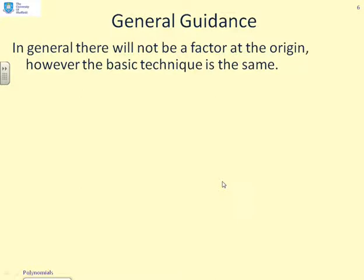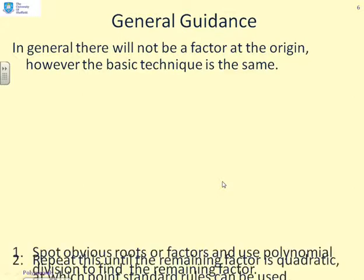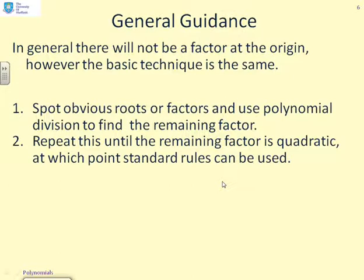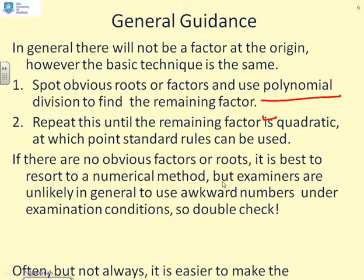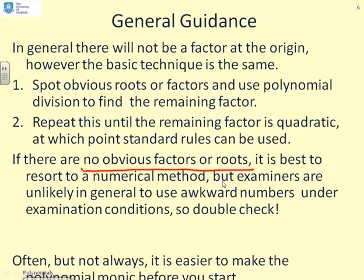What about more generally? There might not be a factor at the origin, which is clearly an easy one to spot. However, the basic technique is still the same. Spot obvious roots or factors, and then use polynomial division to find the remaining factor. Now, we've not really covered polynomial division yet, but that's the key thing. Repeat this process until the remaining factor is quadratic, at which point you can use the quadratic formula. If there are no obvious factors or roots, it's best to resort to a numerical method. And note that in an exam scenario, you won't get things like this, because examiners aren't trying to trick you. Often, but not always, it's easier if you make the polynomial monic before you start.